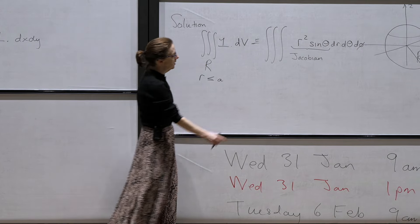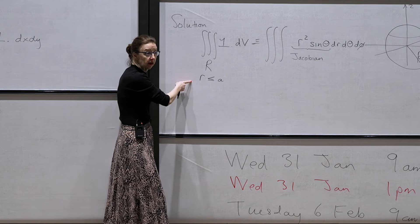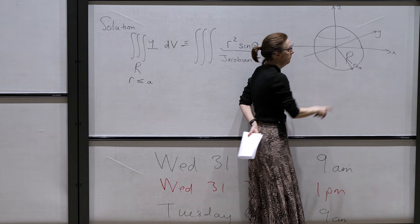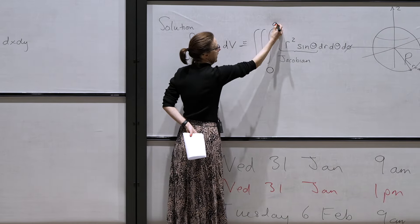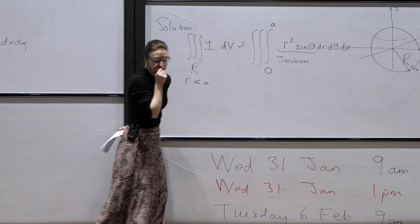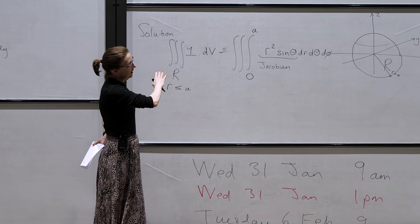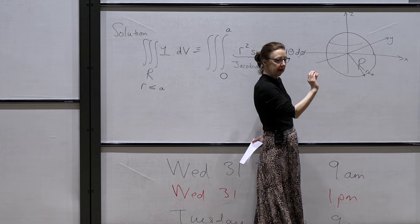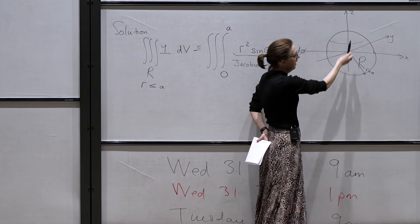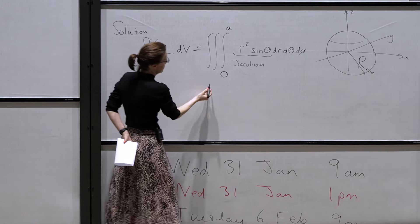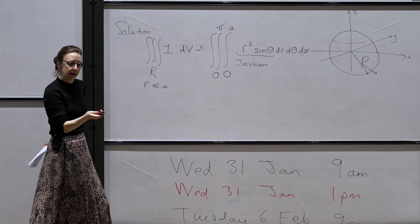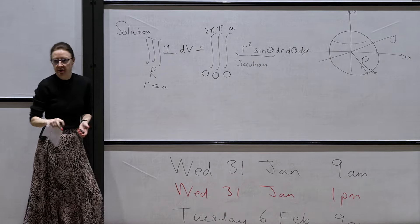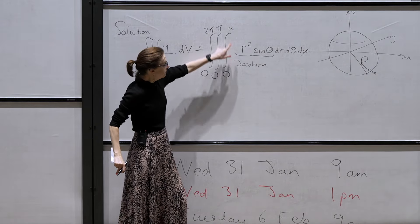The advantage of using this coordinate system is that the limits on your integrals are just constants, not functions. Whereas if I used Cartesians, I'd have to deal with x² + y² + z² = a² on the boundary, which can be done but is more complex. Integrating first with respect to r gives r³/3 sin(theta) evaluated between 0 and a, and then I integrate that with respect to theta and phi.